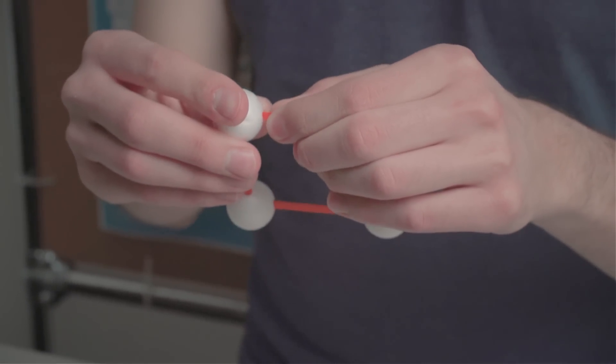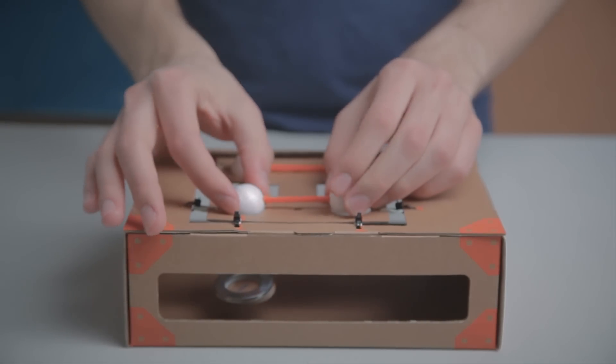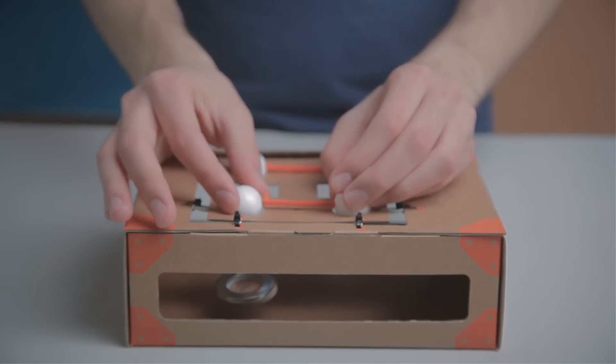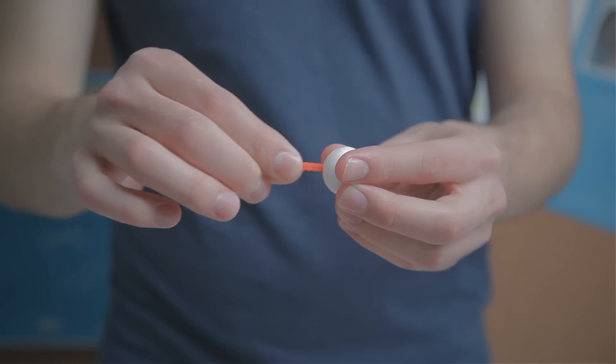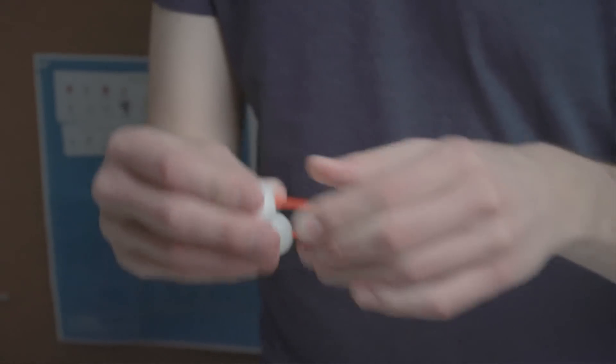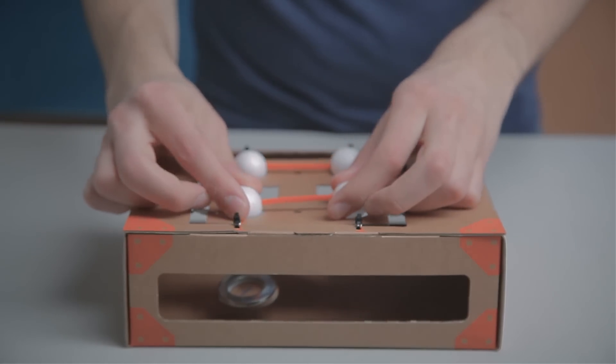Using the holes in your shake table floor as a template, push four pipe cleaners into four styrofoam balls to make a square. Repeat this process to make three more squares, checking each one against the holes in your shake table floor.